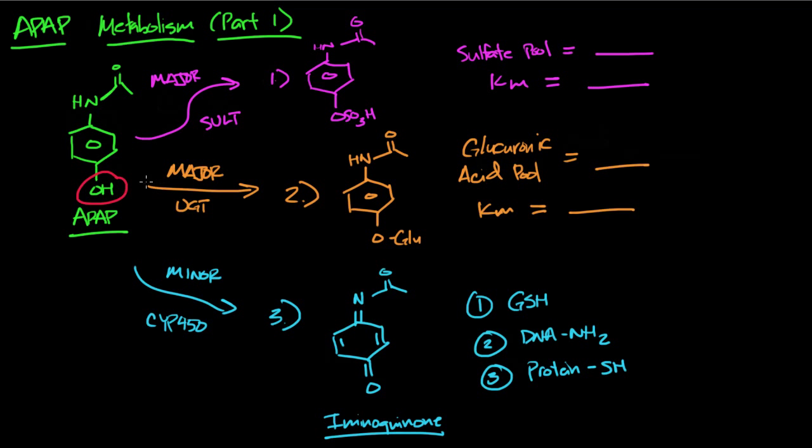Most important functional group is going to be this OH because the OH is what allows the sulfotransferase and the UGT to add their sulfate and their glucuronic acid respectively. What that does is it increases the polarity of the molecule and gets it ready for excretion.